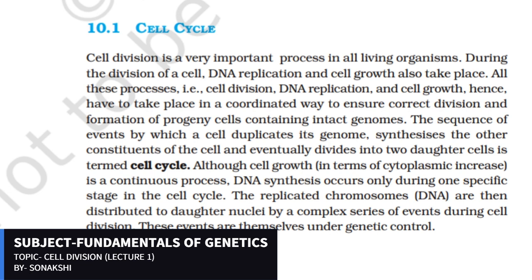A very important thing is that cell growth is continuous, but DNA replication or DNA synthesis occurs only at a specific stage. After that, the replicated chromosomes are equally distributed into the daughter cells. All the events of the cell cycle and cell division are genetically controlled.